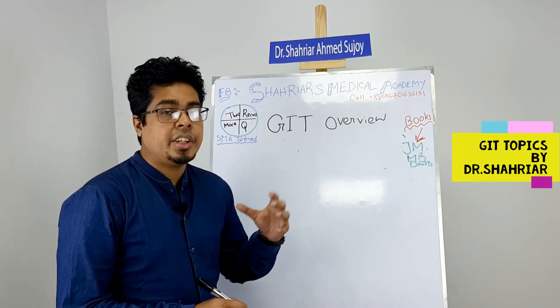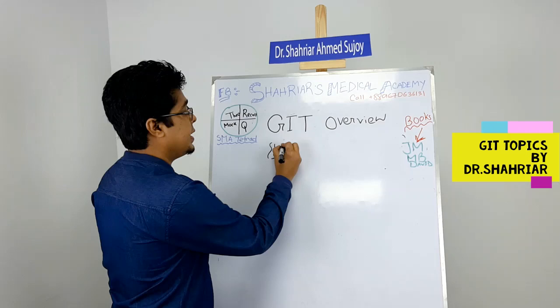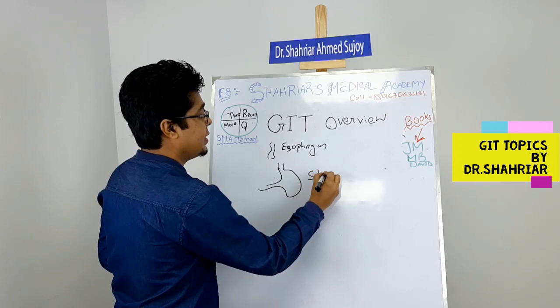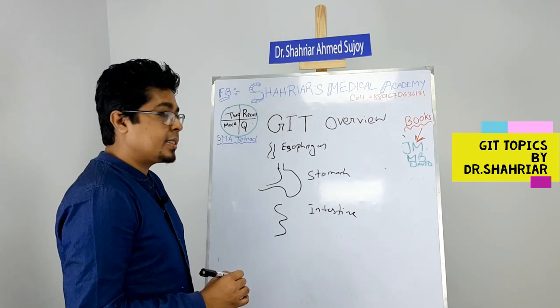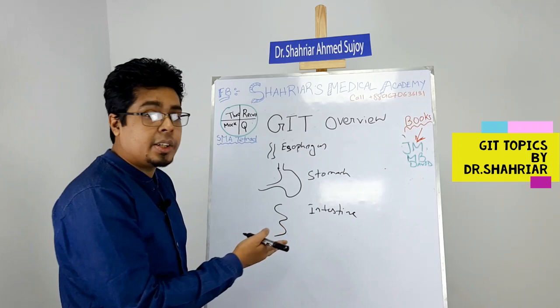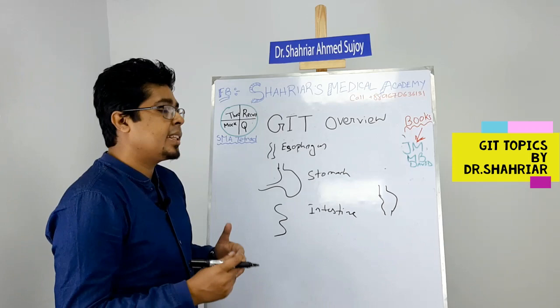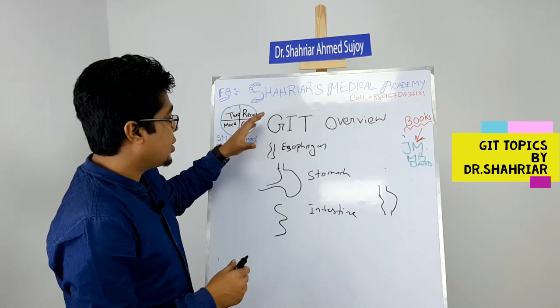So coming back again with the GIT overview. The gastrointestinal system starts from the esophagus, then the stomach — the gastric part — then the intestine, followed by the sigmoid colon, rectum, and anal canal. Some of these are surgical topics; for example, obstruction is purely surgical, so we won't be discussing obstructions in medicine.